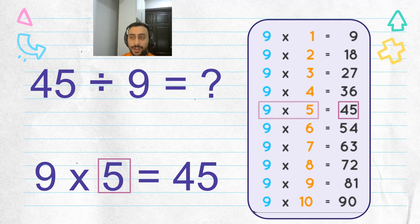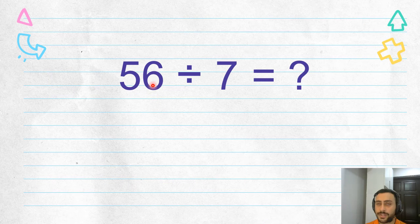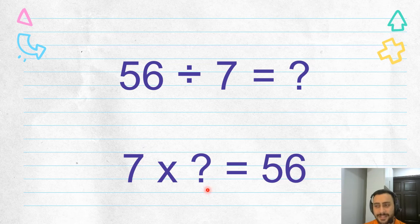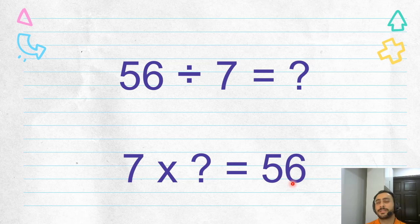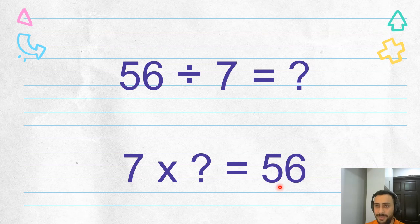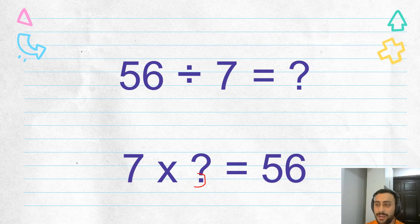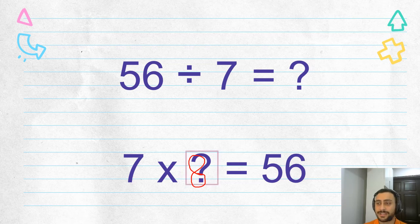Let's look at the next one: fifty-six divided by seven. That means seven times something equals fifty-six. This is a big number, so let's start from seven times ten — seventy; seven times nine — sixty-three; seven times eight — hey! Seven times eight equals fifty-six. So the answer is eight. Fifty-six divided by seven equals eight.